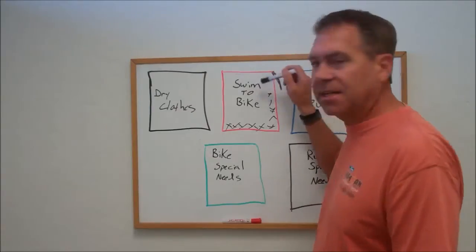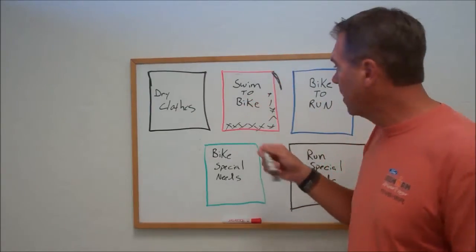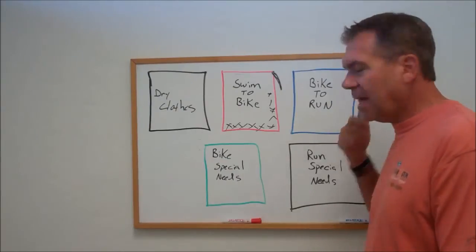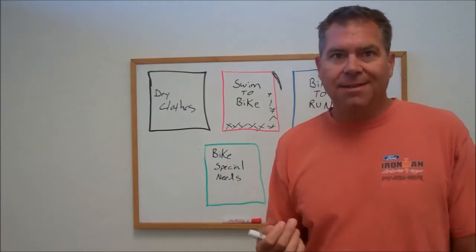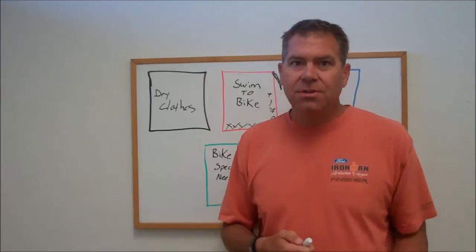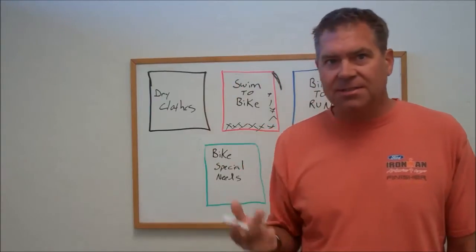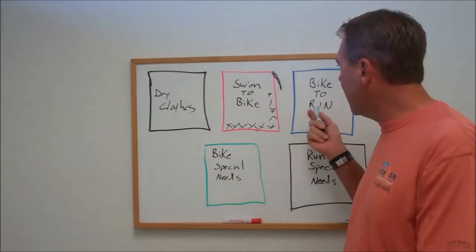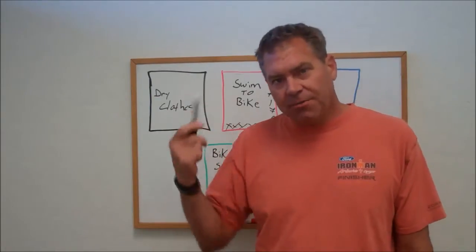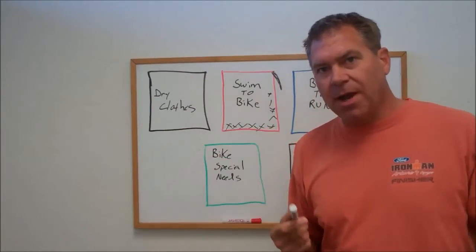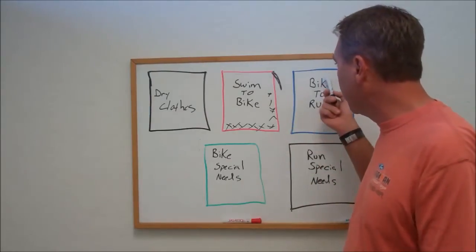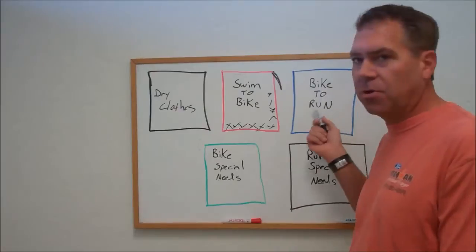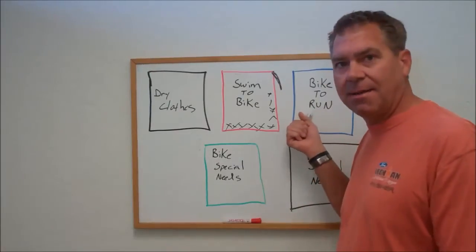So your bike to run bag, that's all your stuff that you need to run. That's your running shoes, a change of socks, visor, whatever you need to run. And you get into that bag once you get off your bike, you hand off your bike, you run up and you pick up your bike to run bag. And just like your swim to bike bag, you put all your cycling gear back into that bag.